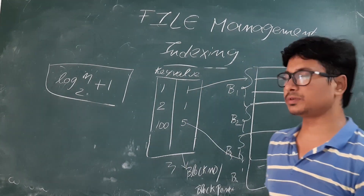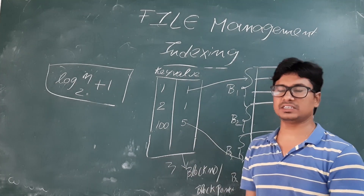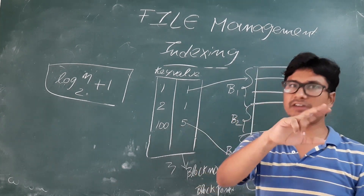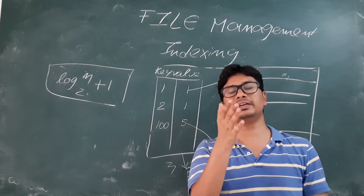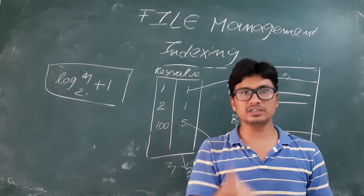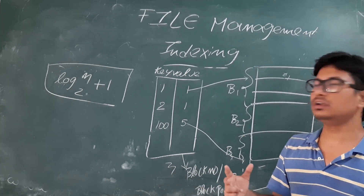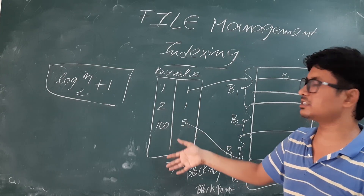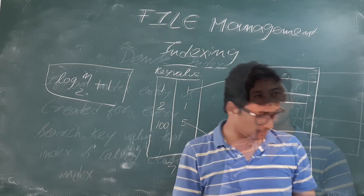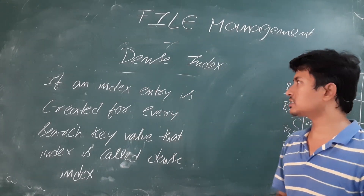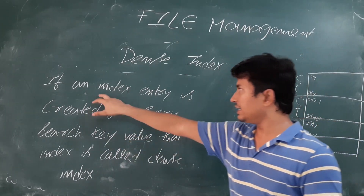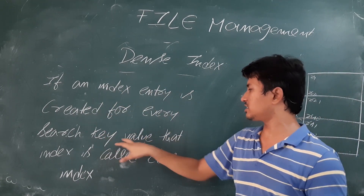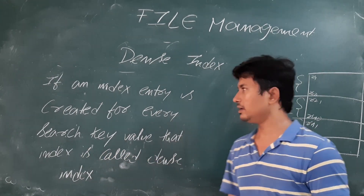We have two main types of indexing: single-level indexing and multi-level indexing. Within single-level indexing there are primary, secondary, and cluster indexing. But classifying based on how many entries are kept in the index file, we have two types: dense indexing and sparse indexing. In dense indexing, an index entry is created for every search key value in the file.